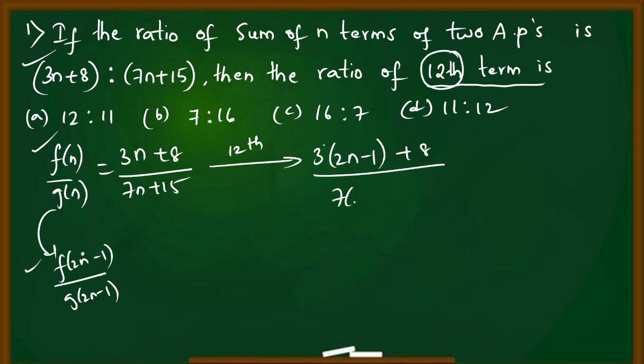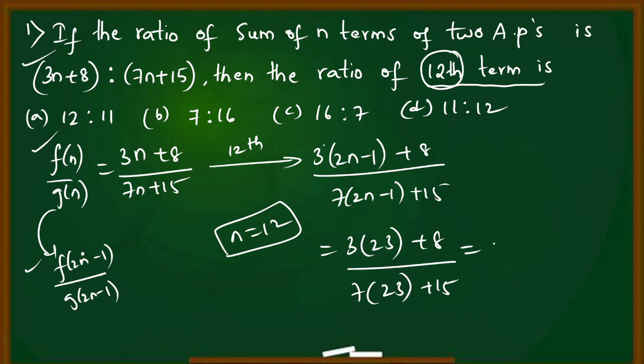So f(2n-1) means put 2n-1 in place of n. That gives us [3(2n-1)+8] divided by [7(2n-1)+15]. Now put n value as 12 because we have to find 12th term. So 3 times 2 times 12 is 24 minus 1, which is 23 plus 8, divided by 7 times 2 times 12, which is 24 minus 1, so 23 plus 15.